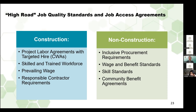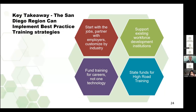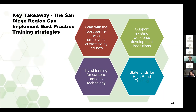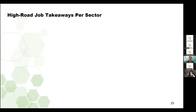Me gustaría recordarle a los participantes que estas no son recomendaciones para o del condado, sino conclusiones claves del informe. Las recomendaciones generales de los autores del estudio son: primero, comenzar con los trabajos, asociarse con los empleadores y personalizarlos por industria; segundo, apoyar y mejorar los programas existentes en instituciones clave de desarrollo de la fuerza laboral que capacitan para carreras, como los muchos programas de aprendizajes en la región; tercero, financiar capacitación integral que prepara a los trabajadores para carreras, no para tecnología de nicho; y cuarto, aprovechar las fuentes de financiamiento estatales para asociaciones de capacitación vial HRTP y carreras de construcción vial HRCC.